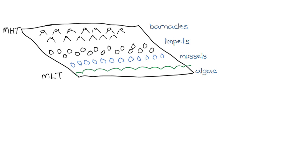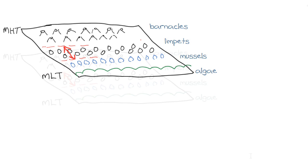In fact, the barnacles and limpets can often extend well above the mean high tide mark in what we call the splash zone. It could be argued that these limits are the limits of the niche of the species — so here, these are the limits of the niche of the limpet. Usually the upper limit is due to desiccation, or drying out, while the lower limit is due to competition with other species.